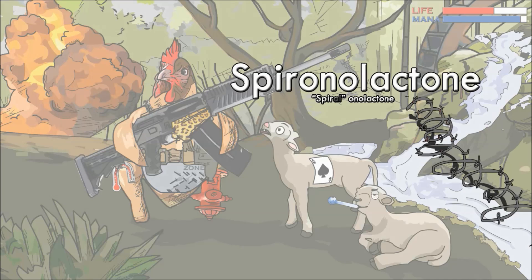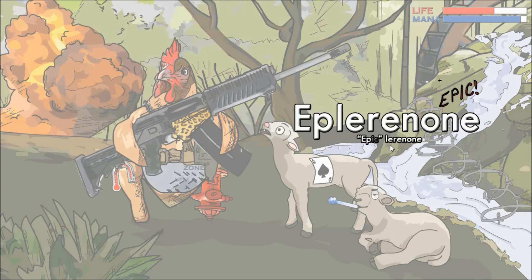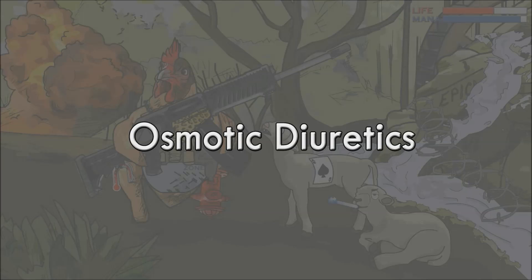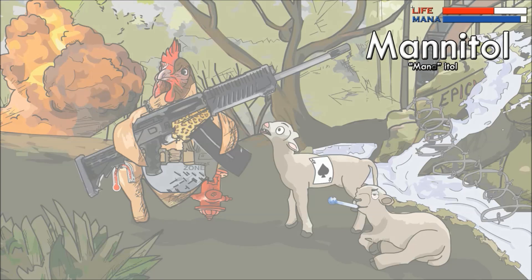Spironolactone — spiral barbed wire. Eplerenone — epic. Amiloride — mill. The last category are the osmotic diuretics. An example is mannitol — mannabar of Rambo Chicken.